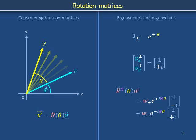Rotation matrices are useful for understanding oscillatory systems in physics, engineering, and biology. In this video, we construct rotation matrices and then show how eigenvector eigenvalue analysis can unveil their presence in dynamical systems.